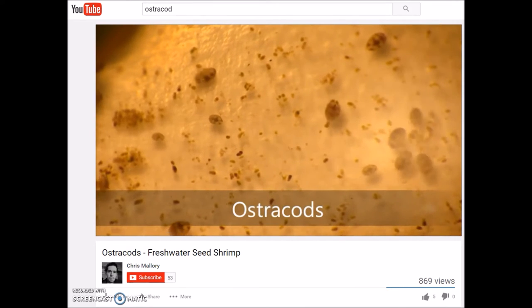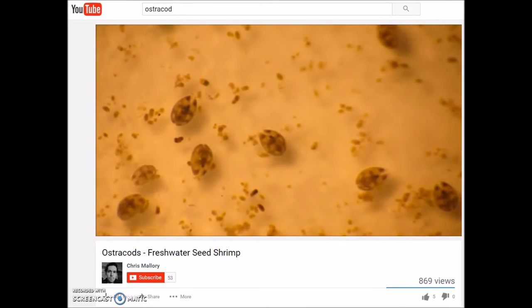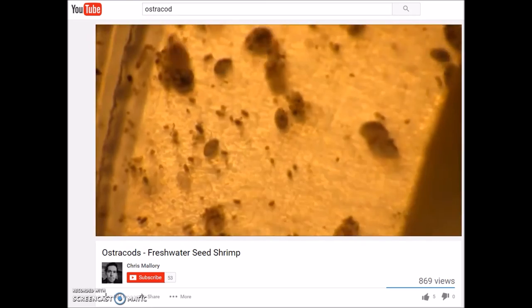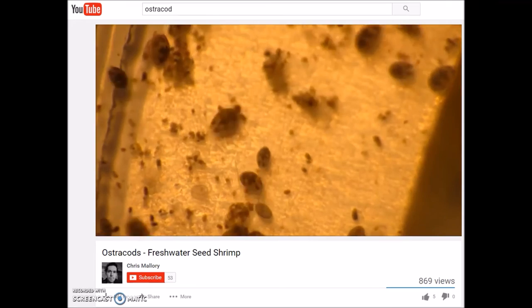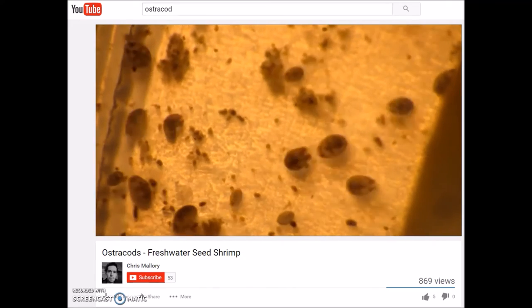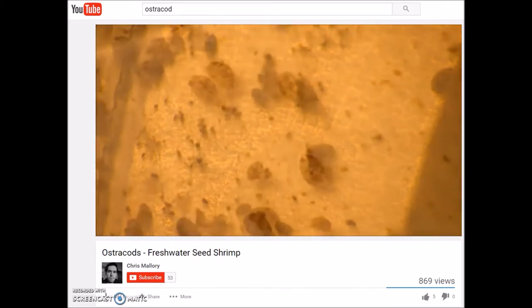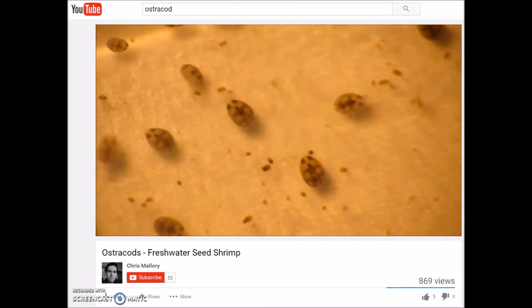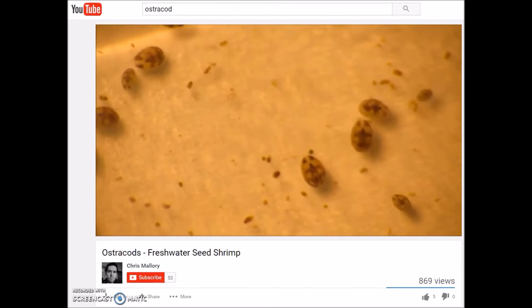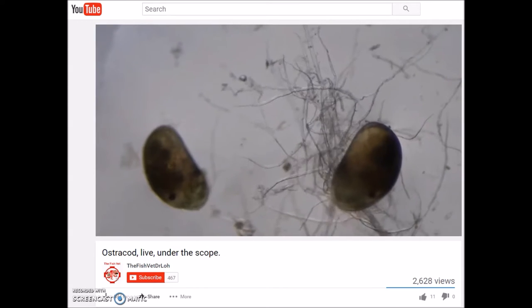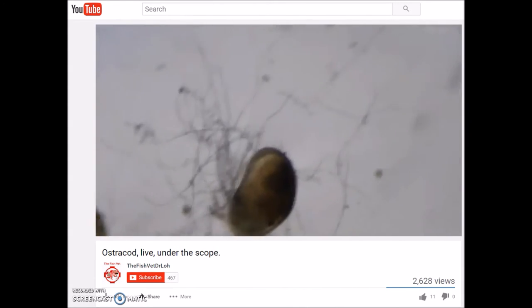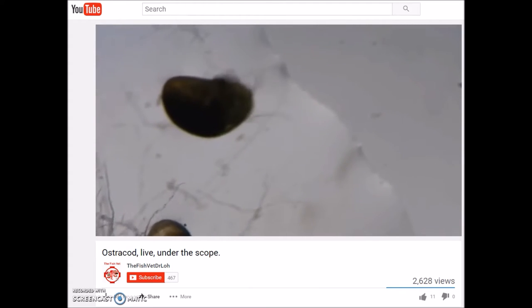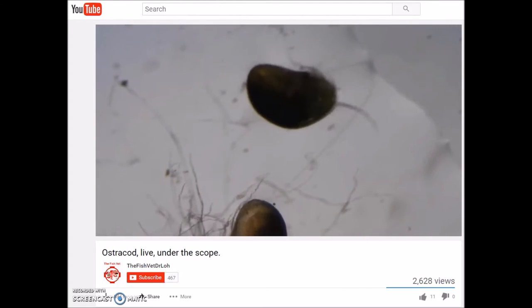Ostracods are by far the most common arthropods in the fossil record, with fossils being found from the early Ordovician to the present. The primary sense of ostracods is likely touch, as they have several sensitive hairs on their bodies and appendages. However, they do possess a single naupliar eye, and in some cases a pair of compound eyes as well.